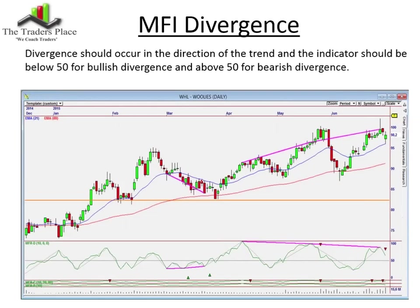Money flow index divergence is a little bit different from some of the other indicators. Divergence should occur in the direction of the trend — I'm using the 21 above 89 exponential moving averages for trend. While the trend is up, I'm looking for bullish divergence, and the MFI must be below 50 on a bullish signal. MFI is divergent — it's below 50 — and against the price we've got falling lows. We've got divergence. MFI crosses the 50 line, and that can be added to your buying signals. I prefer just to use a trend line in this case — that is a nice confirmation of that move upwards.